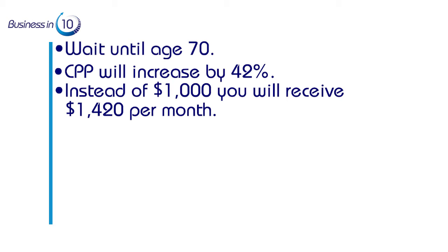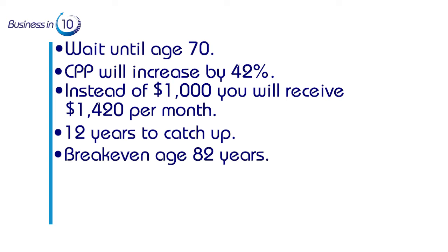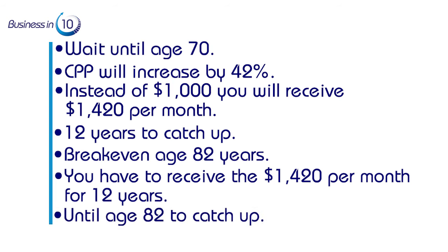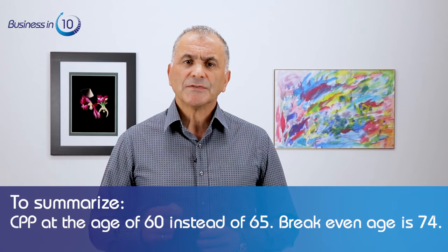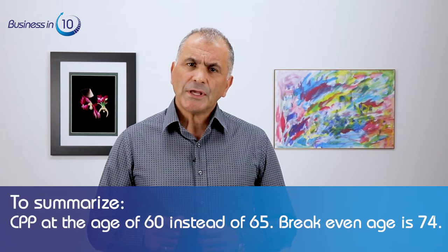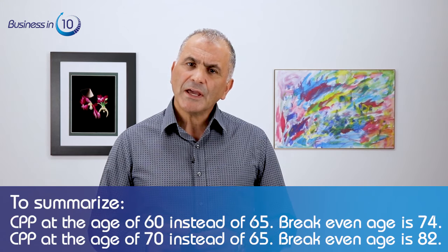If we do the math, it will take 12 years to catch up, making the break-even age 82. That means you have to receive $1,420 per month from age 70 for 12 years until age 82 to catch up with the alternative of $1,000 at age 65. To summarize: taking CPP at 60 instead of 65 gives a break-even age of 74; taking it at 70 instead of 65 gives a break-even age of 82.